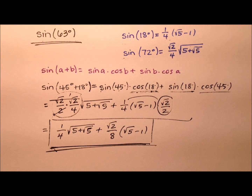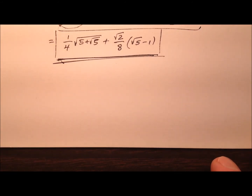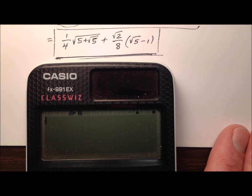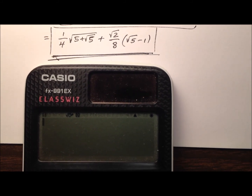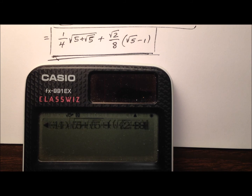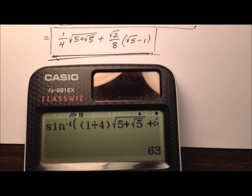Let's grab a calculator and ensure that what we've done works. We're going to do the inverse sine of this expression and should get 63 degrees. The inverse sine of one-fourth times that square root expression, plus the square root of 2 divided by 8 times the square root of 5 minus 1 — and we get 63 degrees.